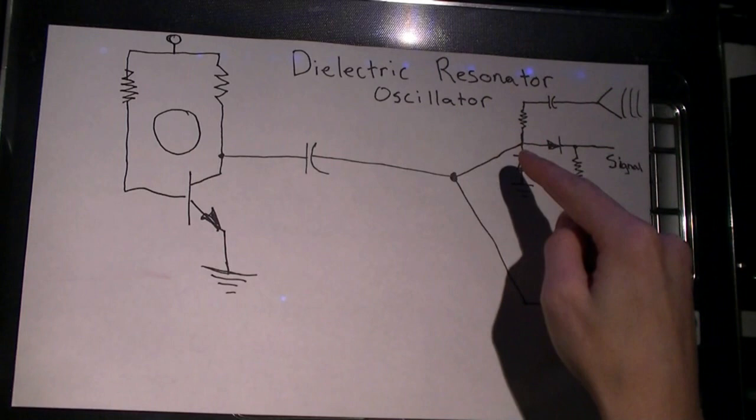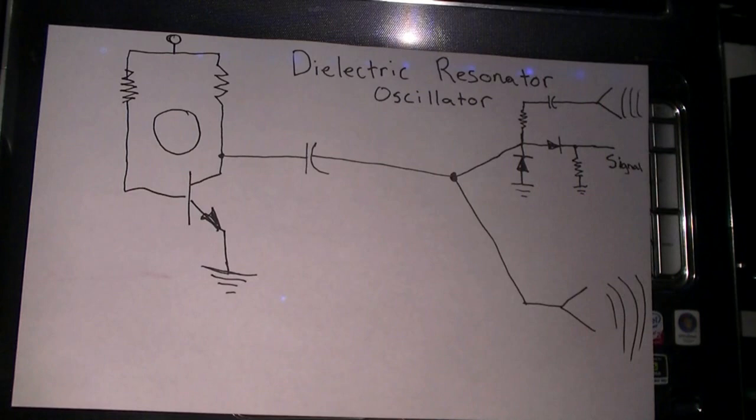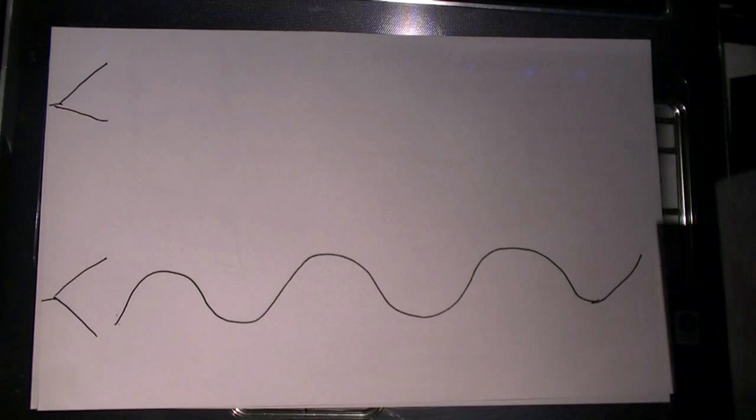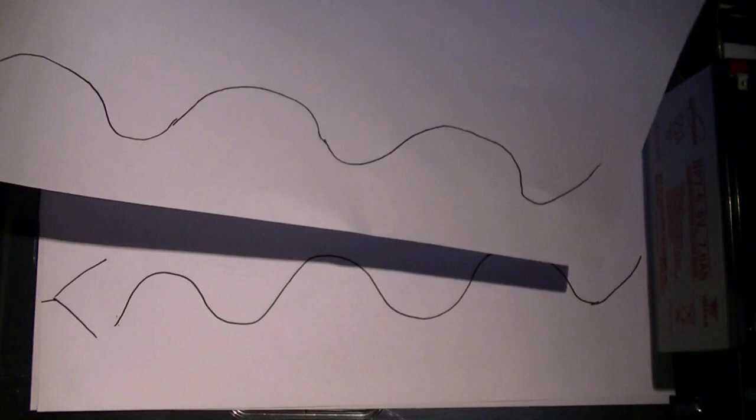If there's no frequency shift between the transmit and receive signals, or also called the Doppler effect, the output of the detector circuit will be a DC value. If there is a difference, that difference will be seen on the signal out. In speed measuring radar, Doppler is usually not used. Speed is determined by counting the number of phase shifts over a certain amount of time.